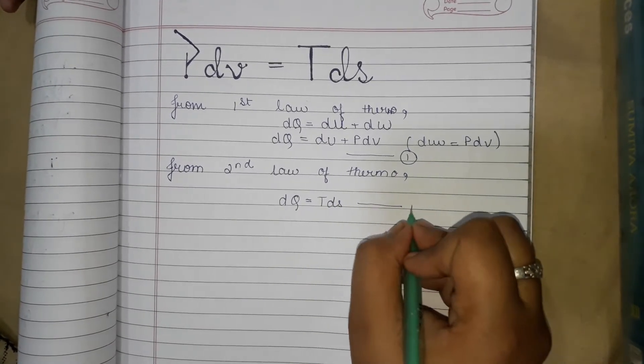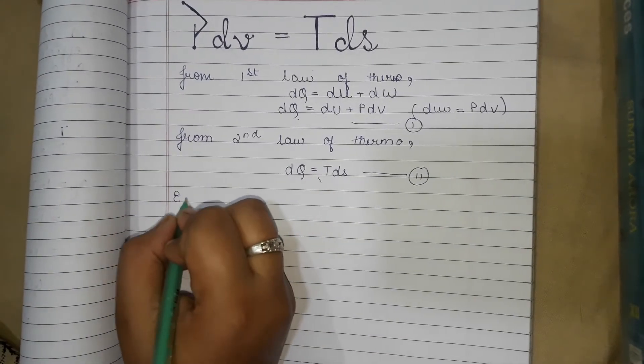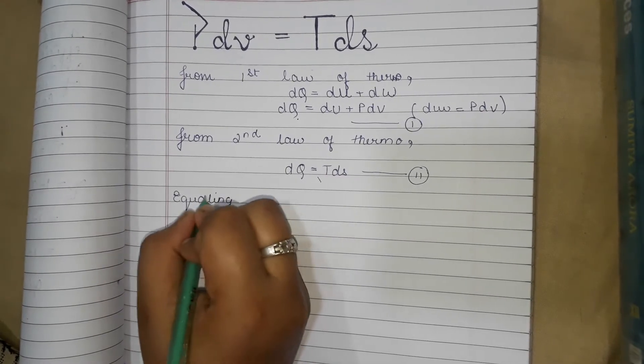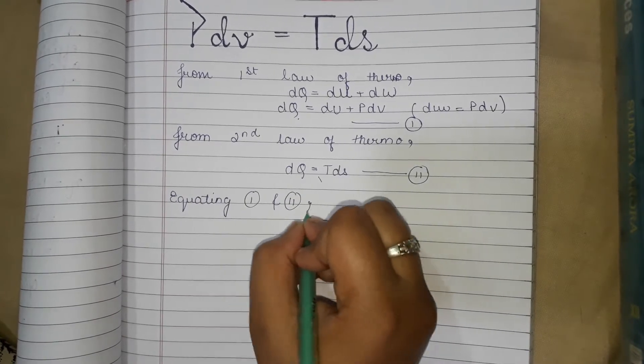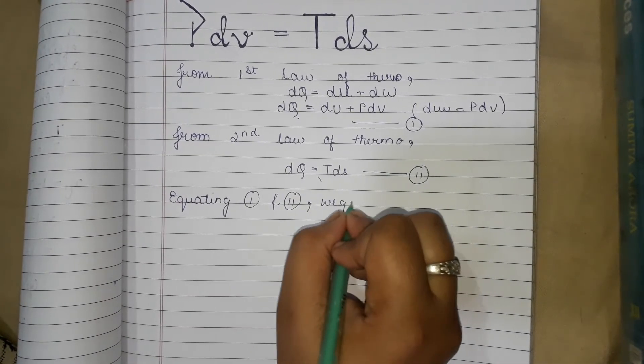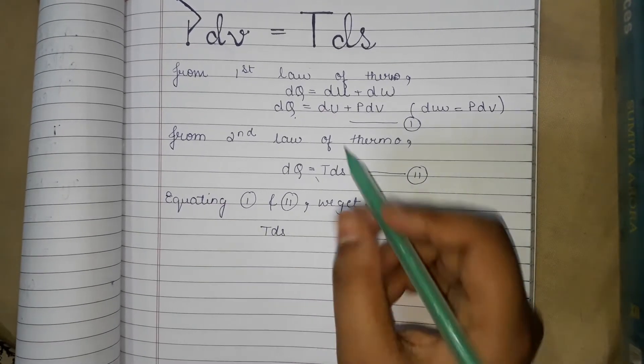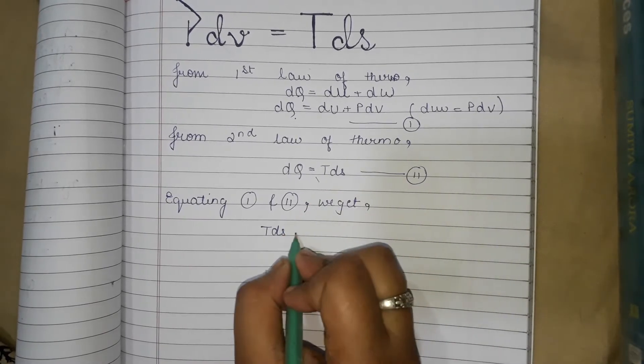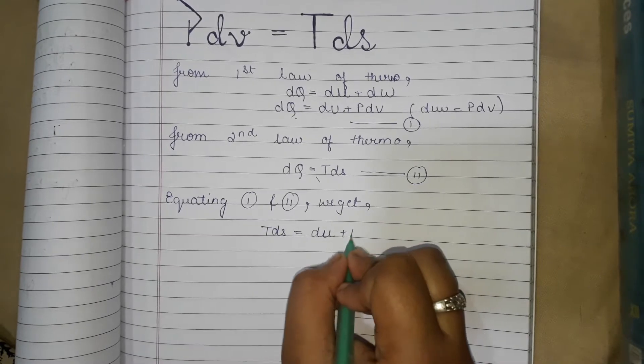Calling this equation 2, and equating equation 1 and 2, we get TdS equals du plus PdV, as dq cancels out.